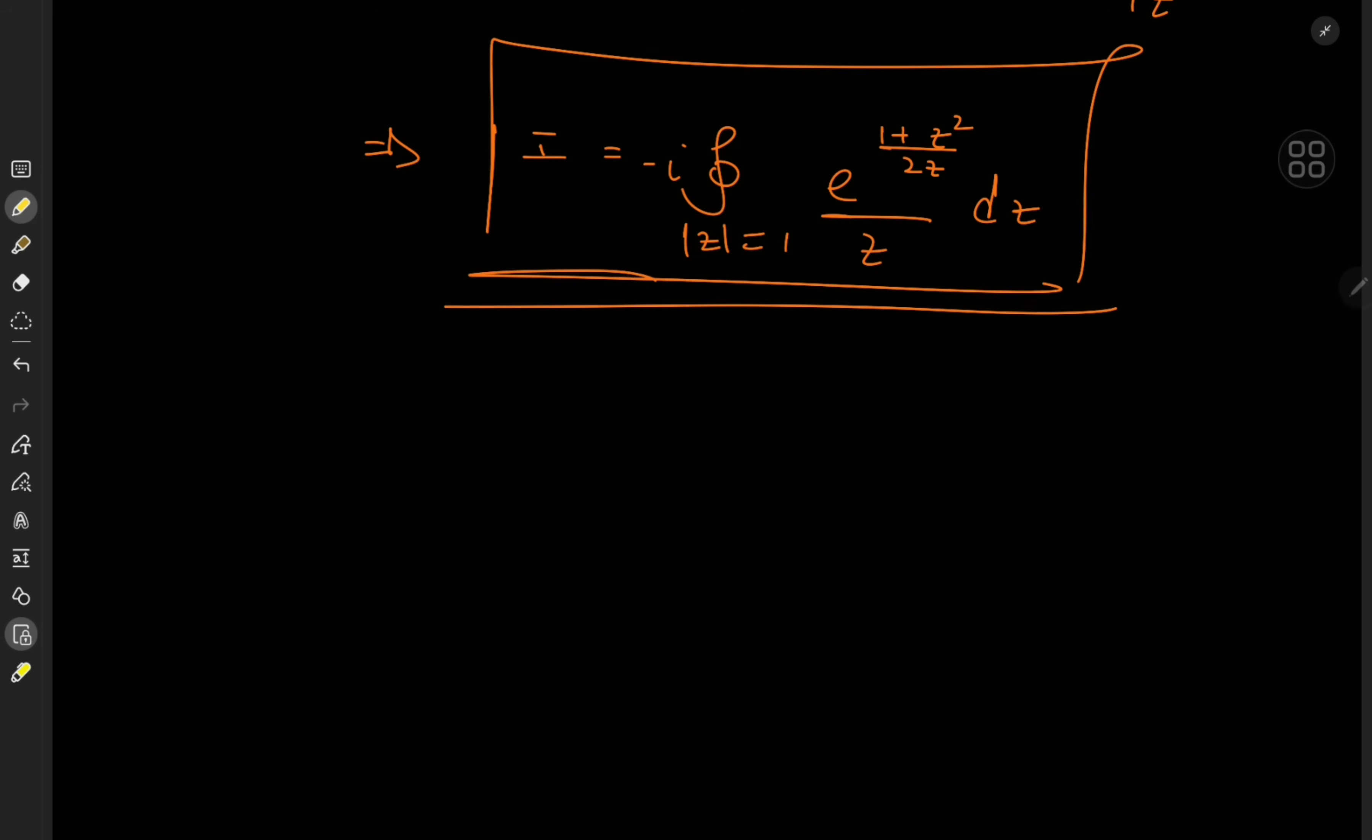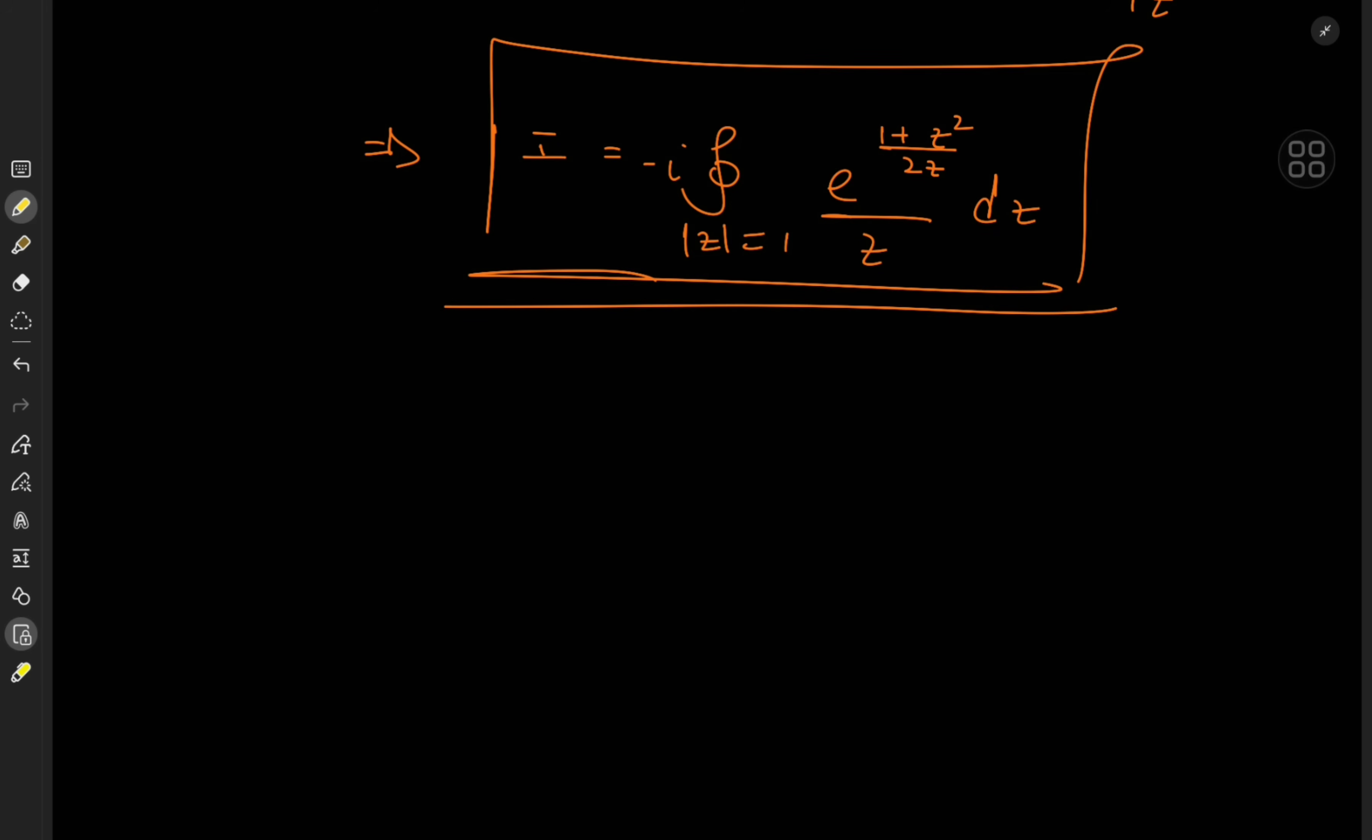Okay, but now what? Well, strange integrals call for strange methods. So I'm actually going to make use of the series expansion for e^z. So we know that e^z equals the sum over k from 0 to infinity. Rather, my notes for some reason use n, and I see why later.